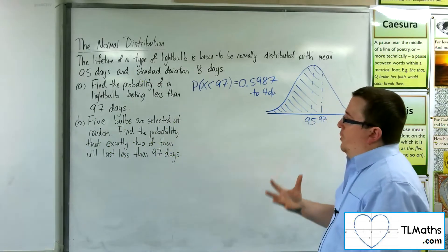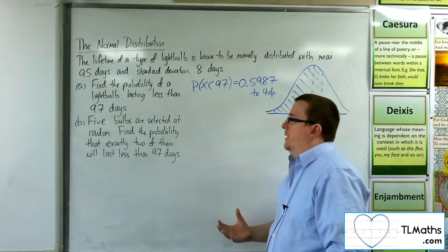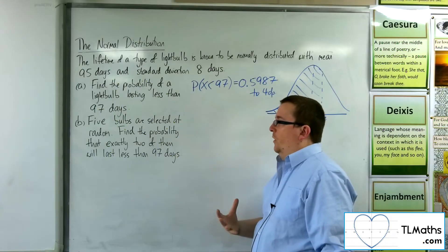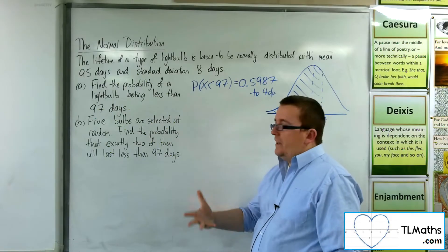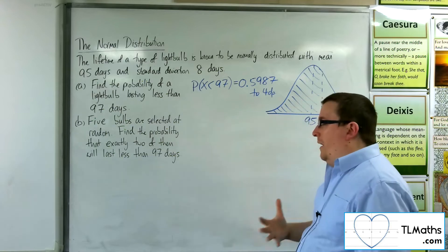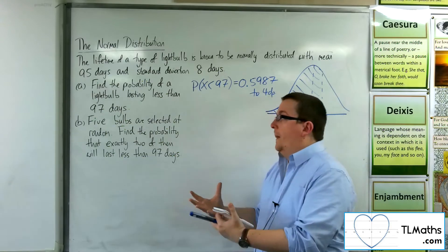So five bulbs are selected at random. Find the probability that exactly two of them will last less than 97 days.